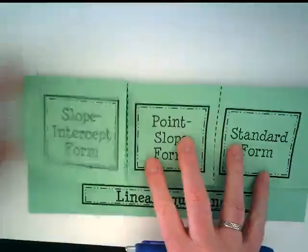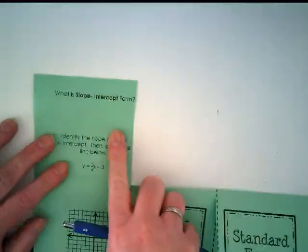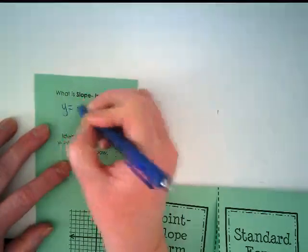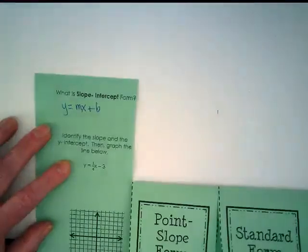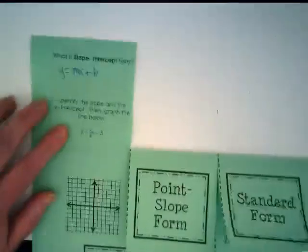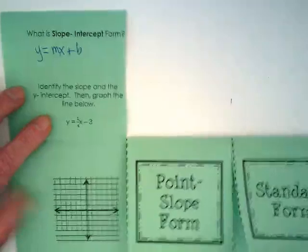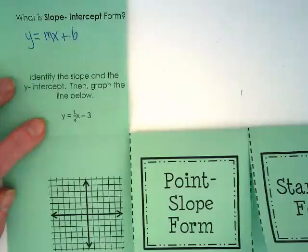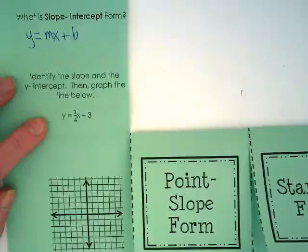Starting with slope-intercept form, what is slope-intercept form? It's y equals mx plus b. If you can take the equation we're given here and identify the slope and the y-intercept, you can take those two things to create the graph.